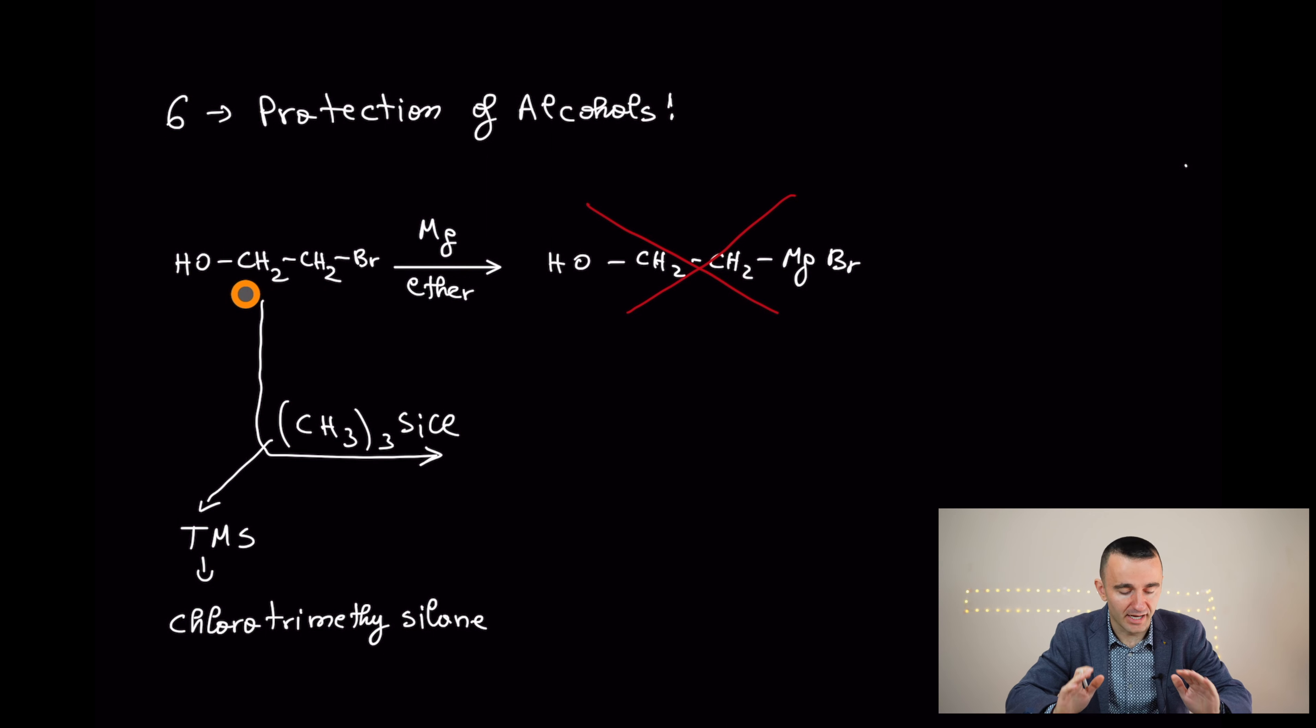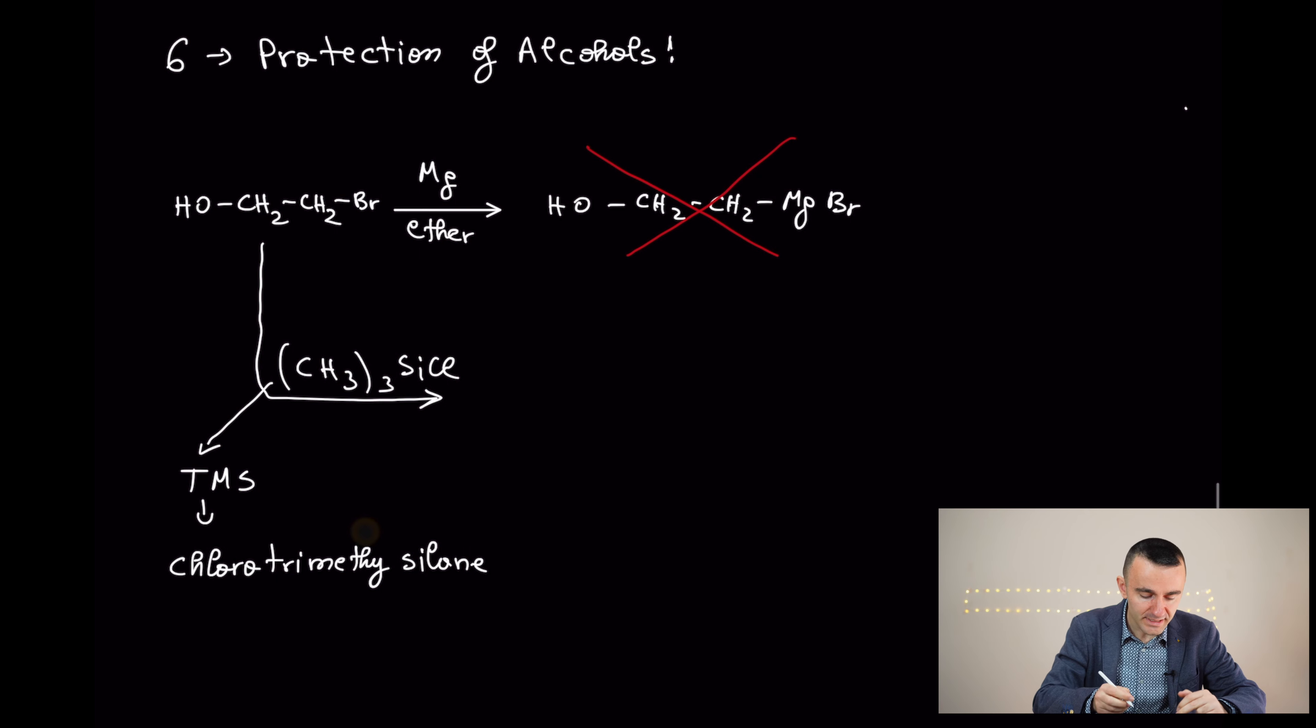there are several other protection compounds used. But this is a typical one that can be used in organic chemistry exam. Okay? But if you are in laboratory synthesis, there are a lot of ways to protect. This is one that is typical to remember. Chlorotrimethylsilane. This compound here, TMS, what it is going to do is going to protect the OH group.